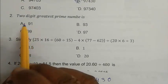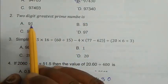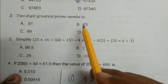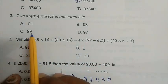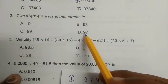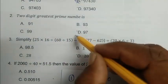Question number 2. 2 digit greatest prime number is. 91 is not a prime number. 93 it is not a prime number. 99 it is also not a prime number. So 97 it is 2 digit greatest prime number.